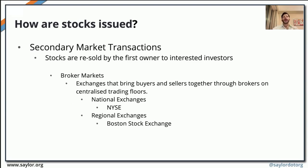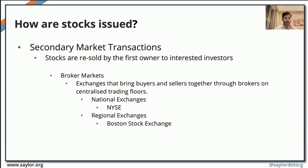In the secondary market, already-sold or already-issued stocks are resold to new owners — the first owners resell these securities to other owners. Here we have different types of markets. We have broker's markets, which are exchanges where buyers and sellers meet on a trading floor through a particular broker, who facilitates the transaction on a centralized floor. Broker's markets are divided into national exchanges — like the New York Stock Exchange — and regional exchanges, like the Boston Stock Exchange.